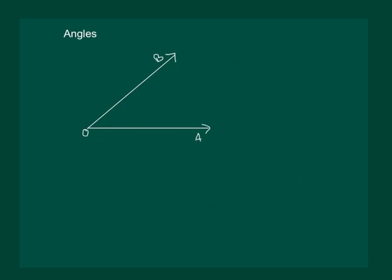We know that an angle is formed when two rays originate from the same endpoint. The rays which make this angle are called the arms of the angle. So, ray OA is one arm of the angle and OB is the other arm of the angle. And the endpoint is called the vertex of the angle.